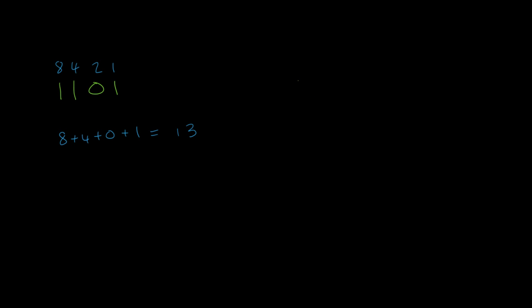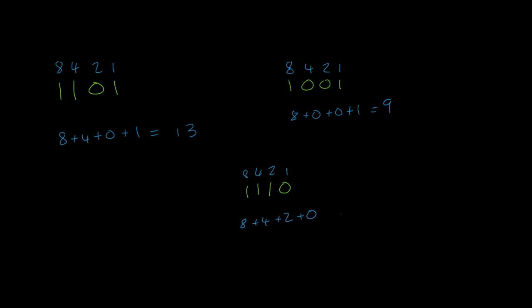Let's take another one: 1 0 0 1. Write the column values above: 1, 2, 4, 8. That's 8 plus nothing plus nothing plus 1, which equals 9. One more: 1 1 1 0. Column values: 1, 2, 4, 8. That's 8 plus 4 plus 2 plus nothing — 8 plus 4 is 12, plus 2 is 14. So the answer is 14.